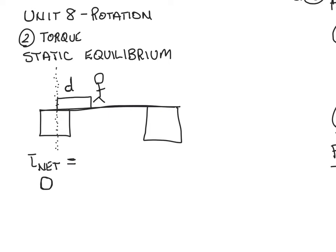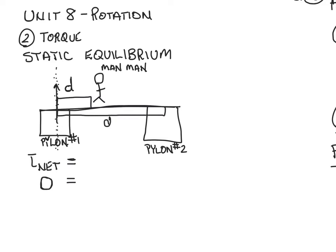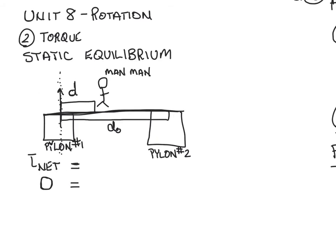Picking an axis of rotation lets us pinpoint what objects are producing force in this free body diagram. We have three objects producing force: pylon number one, pylon number two, and the man. Pylon one produces a force upward, pylon two produces a force upward, and the man produces a downward force of gravity. We'll also assign a distance d0 for pylon two from our axis of rotation. All forces are vertical, so we don't need to deal with any horizontal force work.